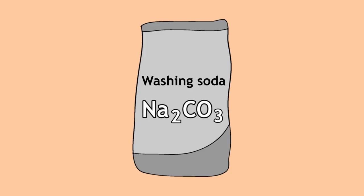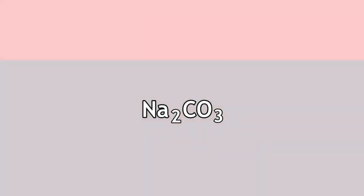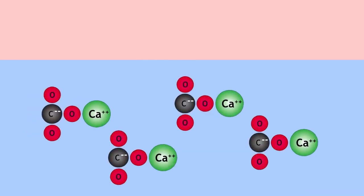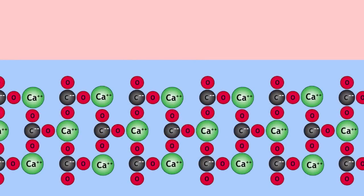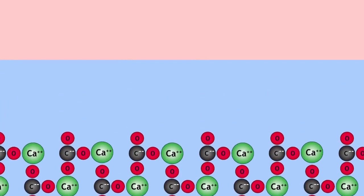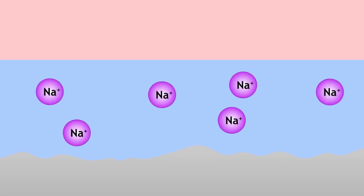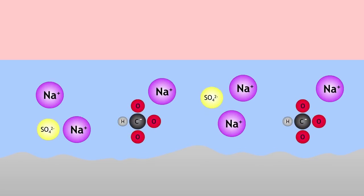Much cheaper than soap. When you add the soda, the calcium ions join up with the carbonate ions, forming limestone as a precipitate, leaving water free of the hard ions. Now only the sodium ions remain in solution, balancing the sulphate or hydrogen carbonate that used to be with the calcium.